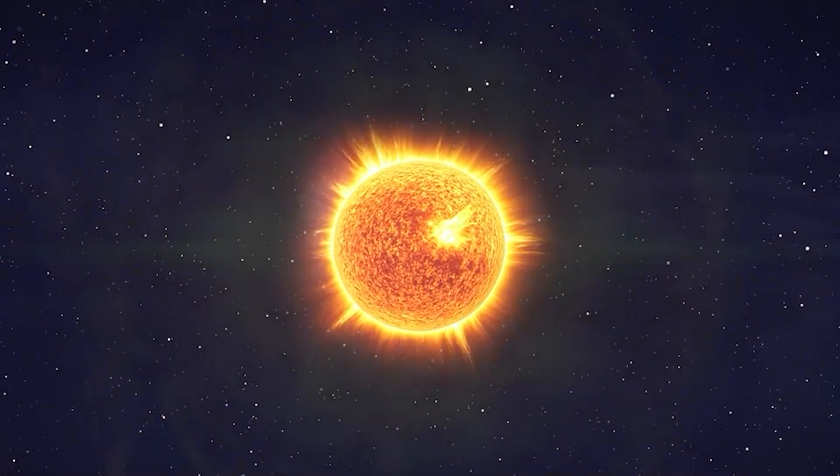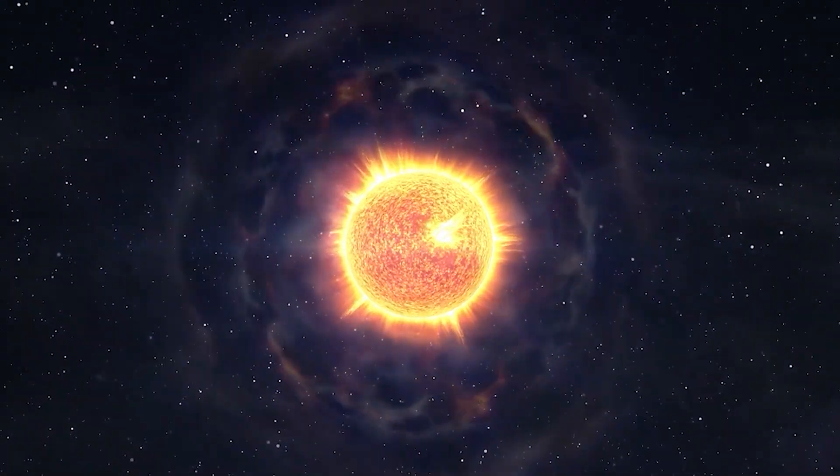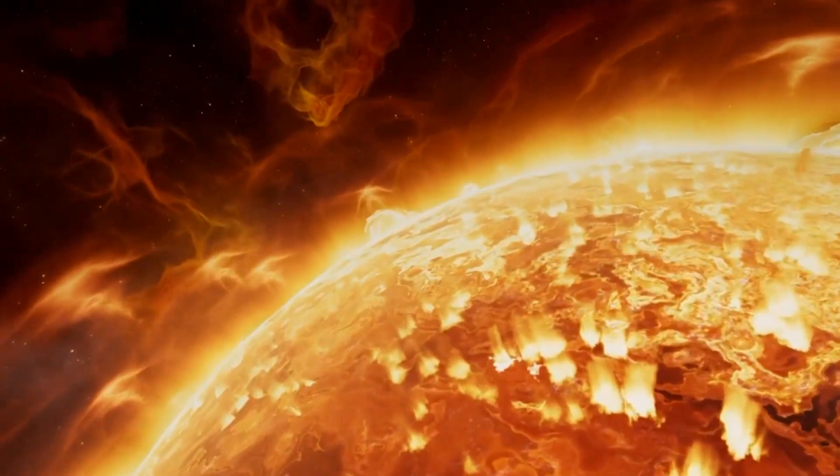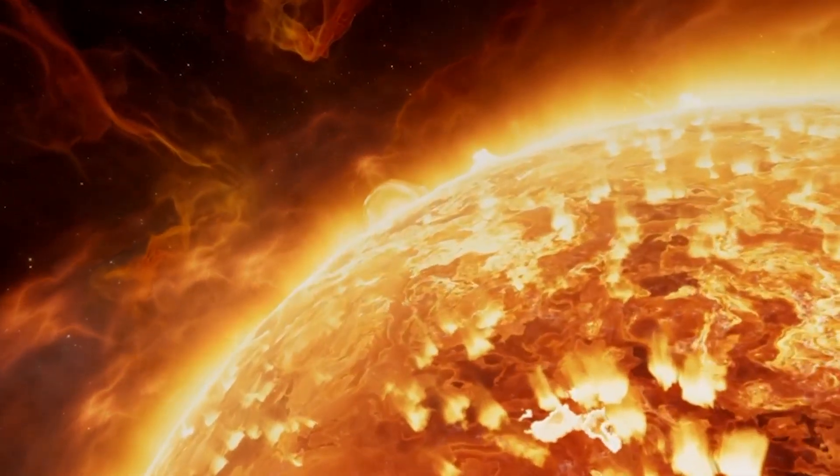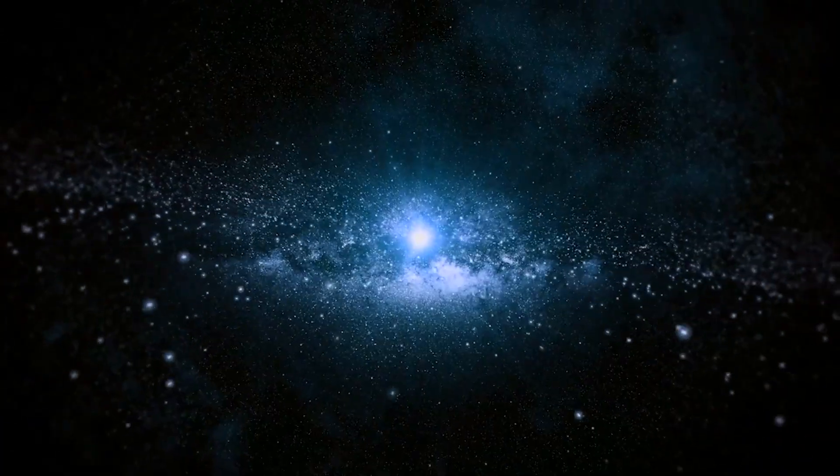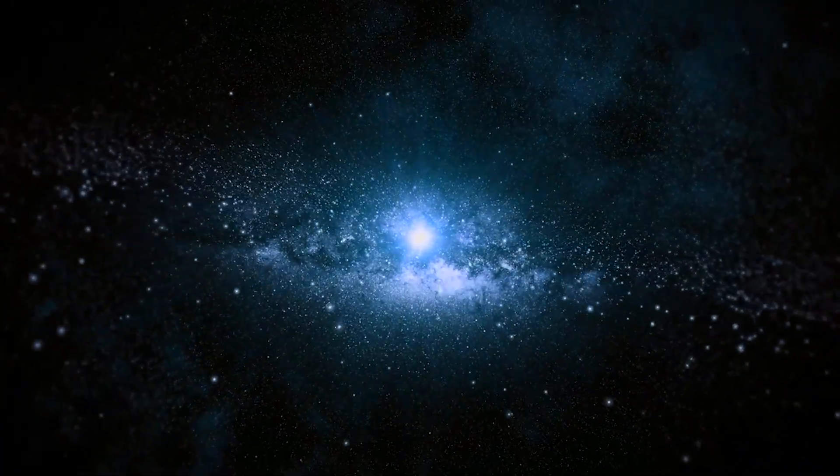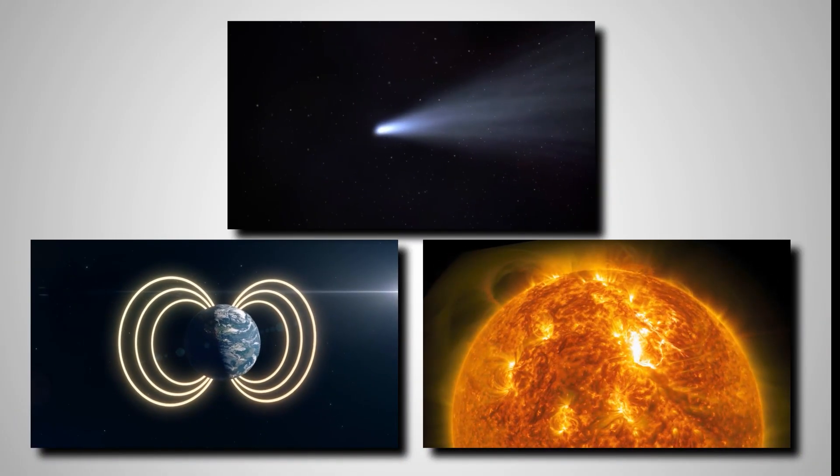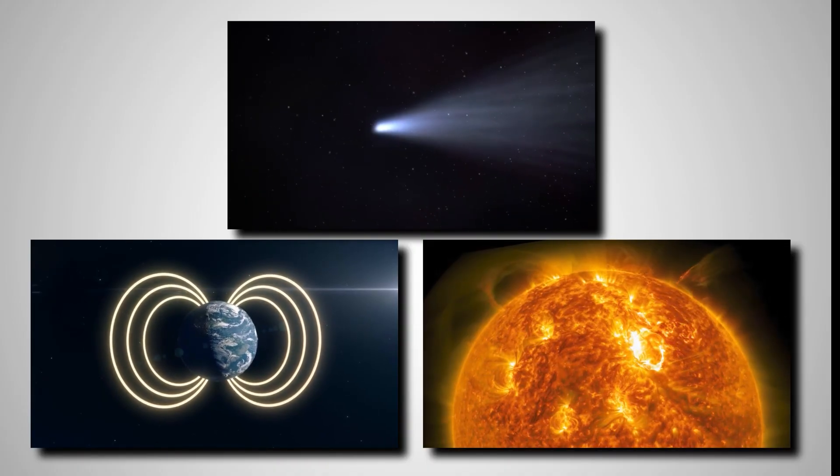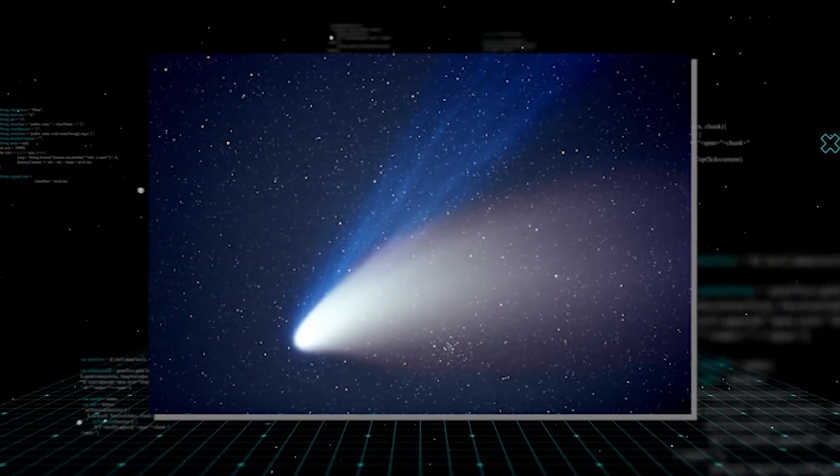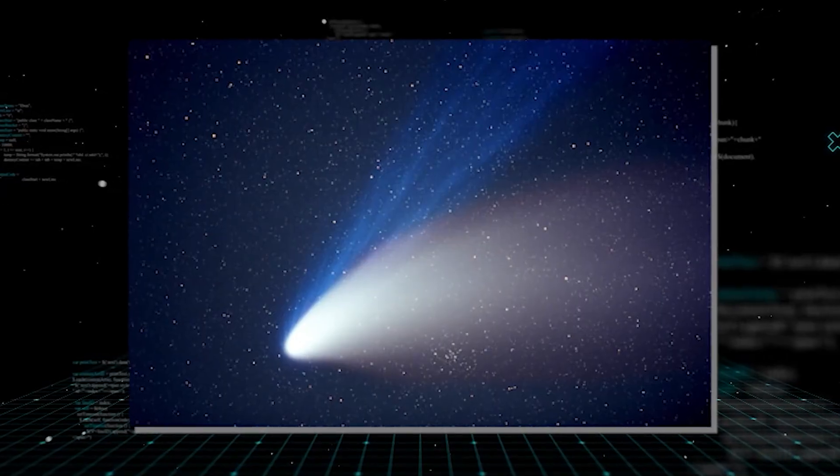What is unusual is how this particular cloud interacts with the Sun. When a coronal mass ejection, a billion-ton cloud of solar plasma, hits a normal comet, it's supposed to be catastrophic. The magnetic fields in the CME should slam into the comet's fragile tail, twisting it, tearing it, and sometimes ripping it off entirely.